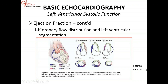For your apical two-chamber view, remember this is the inferior wall, so most of this is going to be the RCA. The anterior wall is going to be the LAD, and right at the apex is going to be the LAD as well. Similarly, with your apical three-chamber view, your anterior septum and the apex is the LAD, and your inferior lateral wall is going to be the RCA.